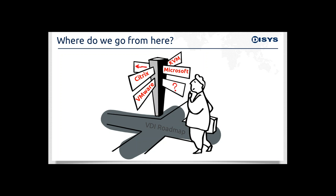So where do we go from here? Before you know where you're going, you have to know where you are. That begins with understanding three things. Number one: what are the business requirements driving this initiative? Number two: what do I currently own? Do I own VMware, the hypervisor, in which case it makes it easy to upgrade to View? Or do I already own Citrix licenses — maybe platinum licenses I'd like to upgrade? What's already in my product portfolio?